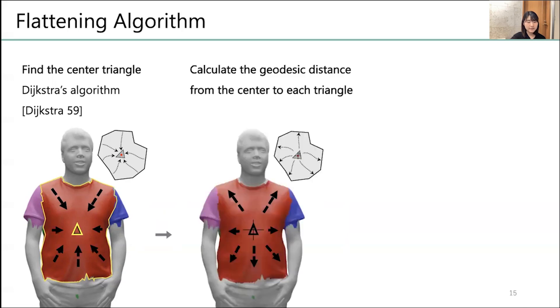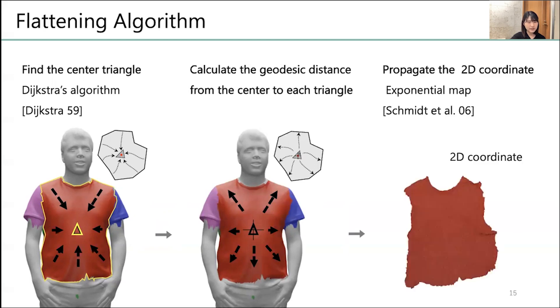Next, we find a geodesic distance from the center triangle to each triangle in the pattern, again using Dijkstra algorithm. Finally, we apply exponential map method, an algorithm for converting 2D patterns to 3D-shaped surfaces, to flatten the patterns from the mesh to 2D plane.